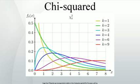For many practical purposes, for k greater than 50 the distribution is sufficiently close to a normal distribution for the difference to be ignored. Specifically, if X ~ χ²(k), then as k tends to infinity, the distribution tends to a standard normal distribution. However, convergence is slow as the skewness is present and the excess kurtosis is 12/k. The sampling distribution of ln(χ²) converges to normality much faster, as the logarithm removes much of the asymmetry.